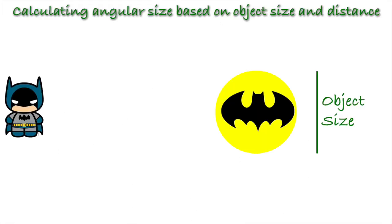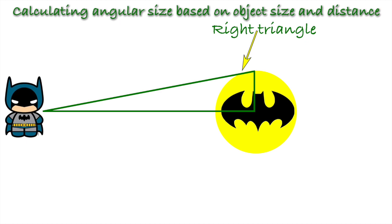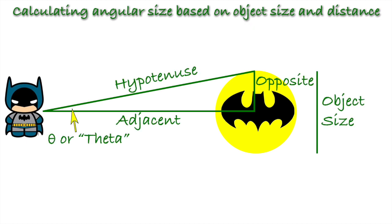We'll start with Batman as he surveys Gotham City from the top of a tall building. Several blocks away is the bat signal on top of the police headquarters. We know the diameter of the bat signal and how far away it is from Batman. Now we want to calculate the expected angular size. We start by defining a right triangle with one point at Batman's eyes, another point at the center of the bat signal, and the third point on the edge of the bat signal. We will be considering the angle near Batman and call it theta.